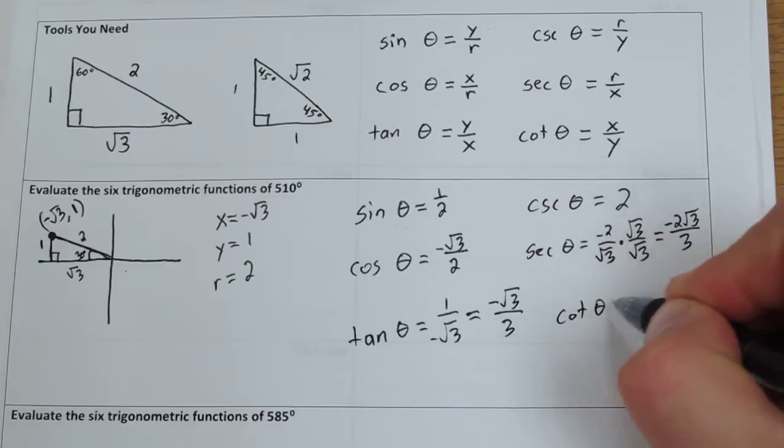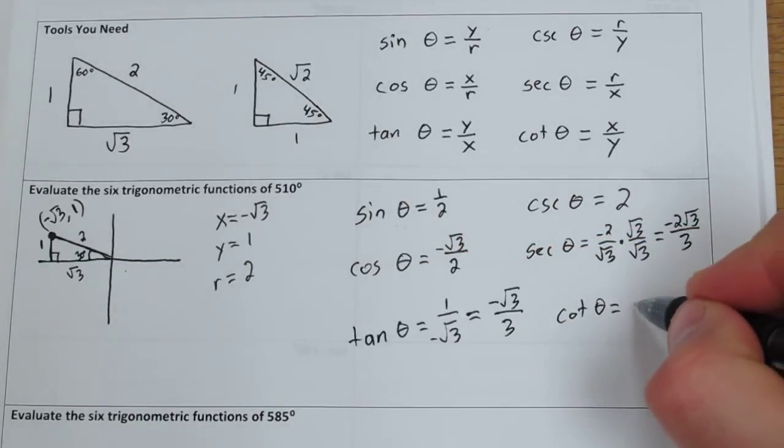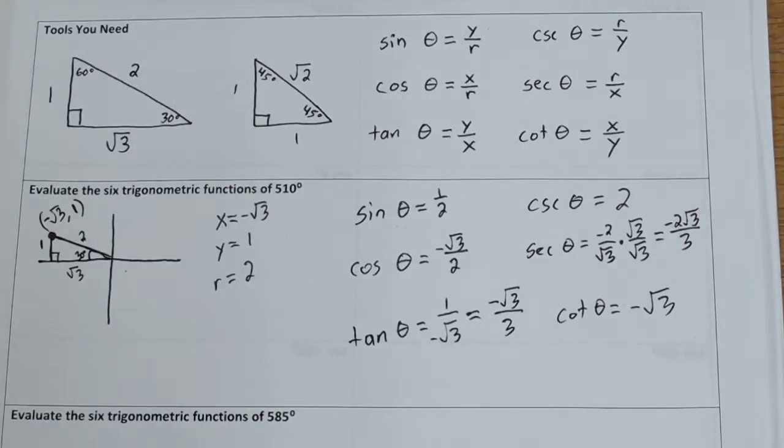And cotangent theta will just be negative rad 3 over 1, so it's just negative rad 3. Here's another one.